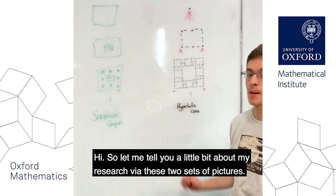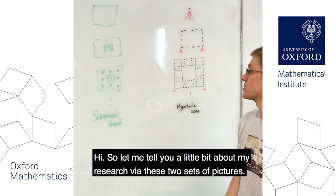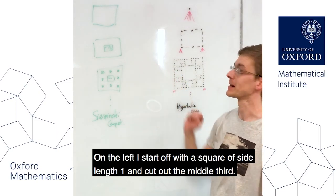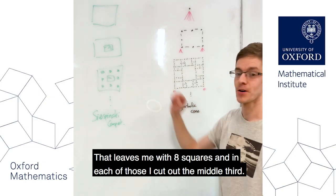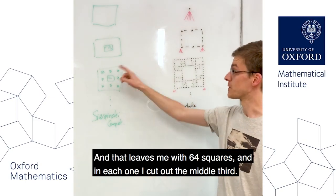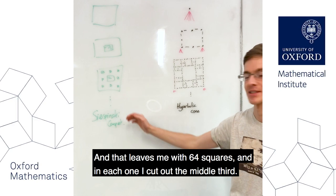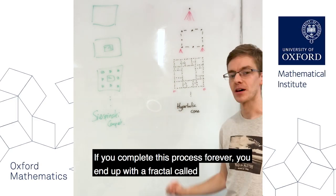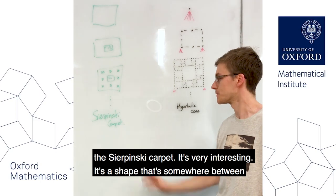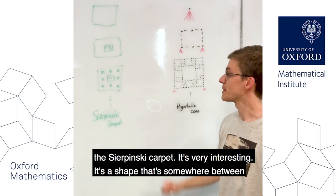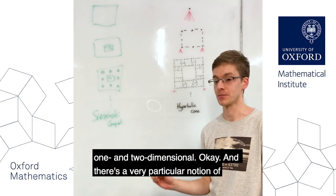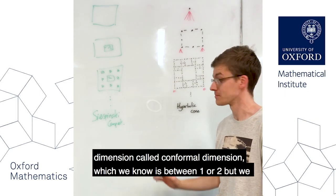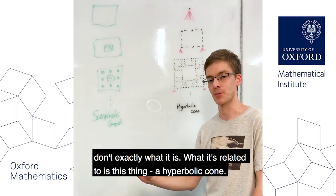Let me tell you a little bit about my research using these two sets of pictures. On the left, I started off with a square of side length one and cut out the middle third. That leaves me with eight squares, and in each of those I cut out the middle third, leaving 64 squares, and so on. If you complete this process forever, you end up with a fractal called the Sierpinski carpet. It's a shape that's somewhere between one and two-dimensional, and there's a very particular notion of dimension called conformal dimension, which we know is between one and two, but we don't know exactly what it is.